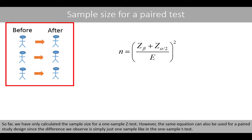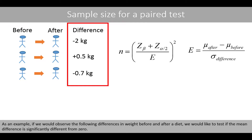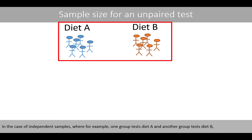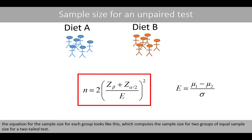So far, we have only calculated the sample size for the one-sample z-test. However, the same equation can also be used for a paired study design, since the difference we observe is simply just one sample, like in the one-sample t-test. As an example, if we would observe differences in weight before and after a diet, we would like to test if the mean difference is significantly different from zero. If we expect a mean weight difference of, for example, 2 kilos, the effect size will be 2 divided by the standard deviation. In the case of independent samples, where one group tests diet A and another group tests diet B, the equation for the sample size for each group computes the sample size for two groups of equal sample size for a two-tailed test.